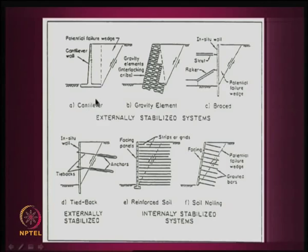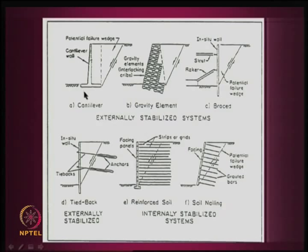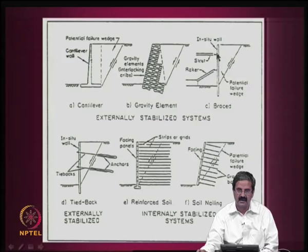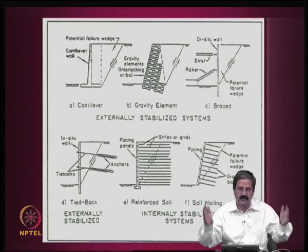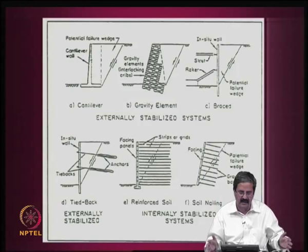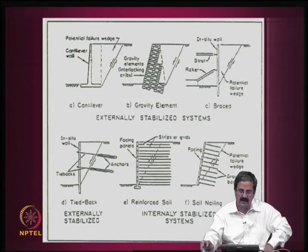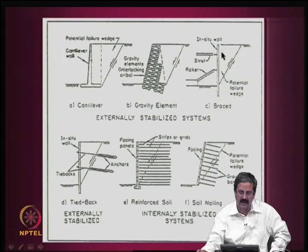Some examples of externally reinforced soil systems include cantilever walls and gravity walls, where you have a potential failure surface and design the retaining wall for the weight of soil and earth pressure acting. We also have braced excavations — say for pipe laying, you excavate about 2.5 meters on either side, and to prevent that excavation from caving in, you put struts and tensile members at various levels to create a stable retaining system.